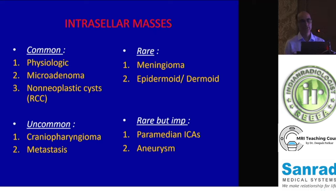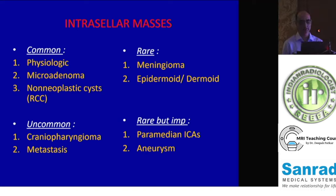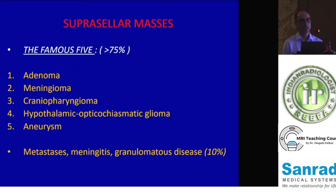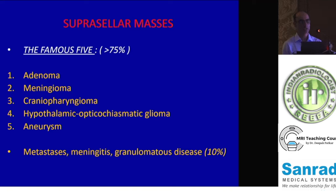Enumerating the masses: intracellular lesions — common ones are physiologic hyperplasia of the gland, microadenomas, and Rathke's cleft cysts. Uncommon ones are craniopharyngiomas and metastasis. Rare ones are meningiomas and dermoids. Rare but important ones are paramedian ICA and aneurysms. For suprasellar masses, the top five constituting more than 75% of cases are macroadenomas, meningiomas, craniopharyngiomas, hypothalamic optico-chiasmatic gliomas, and aneurysms.